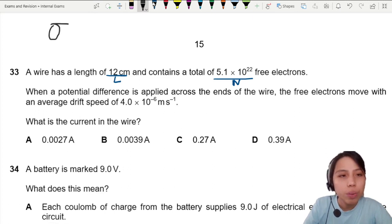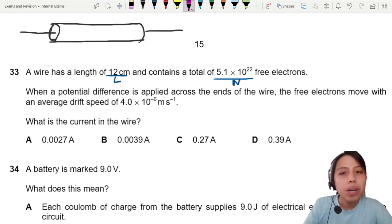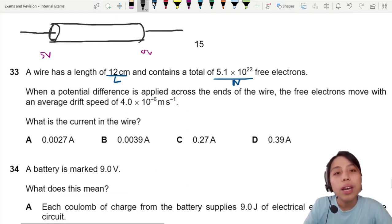So we have a wire connected. When you apply potential difference, such as maybe on this side 5 volts, here 0 volts. Actually, in this wire there are a lot of electrons.